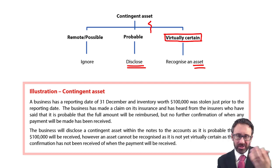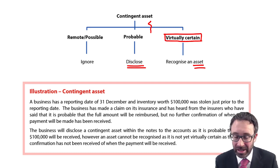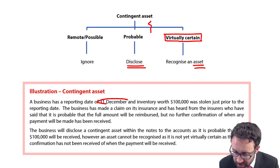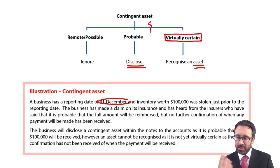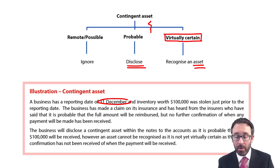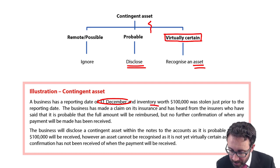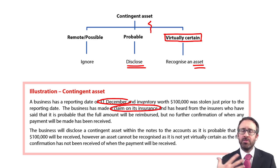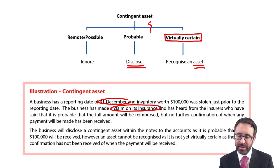So let's look at the illustration just below. We've got a reporting date of the 31st of December. Somebody's stolen some of our inventory — £100,000 worth — just prior to the reporting date. What we've done is made a claim on our insurance. So we have a contingent asset: we're looking to receive the cash back at some point in the future, but that is contingent on other events.